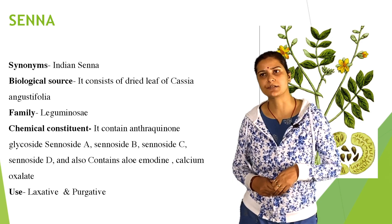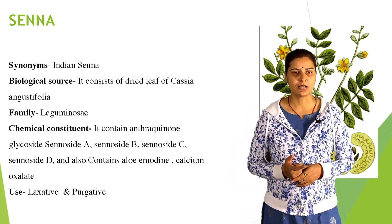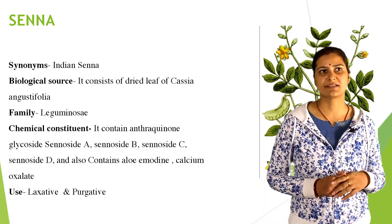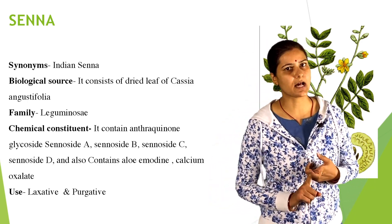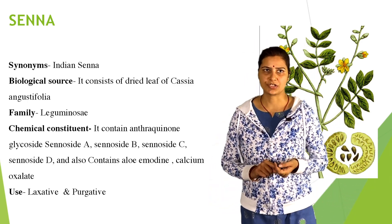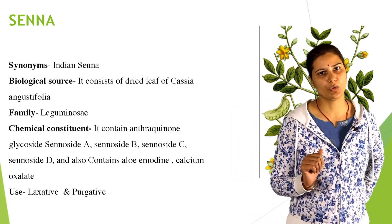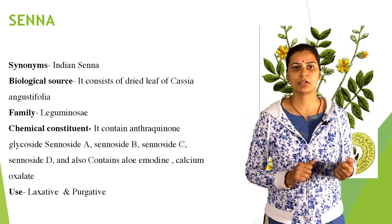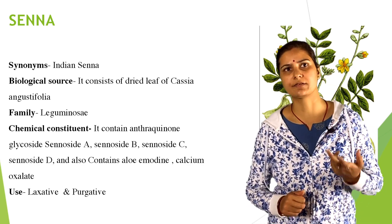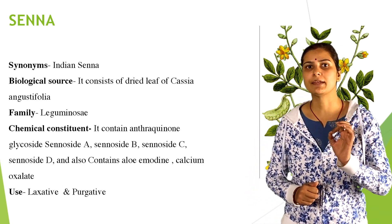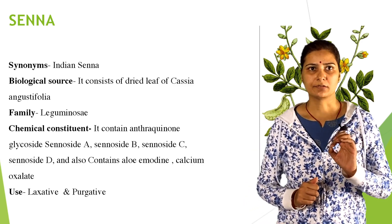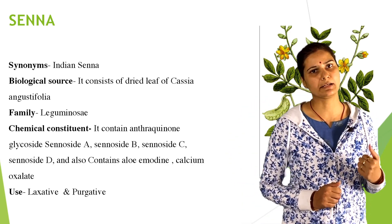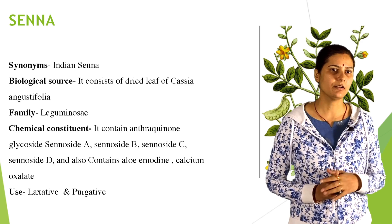Senna: synonym is Indian senna. Biological source — it consists of dried leaves of Cassia angustifolia. Genus: Cassia; species: angustifolia; family: Leguminosaceae. Chemical constituents: it contains anthraquinone glycosides — sennoside A, sennoside B, sennoside C, and sennoside D — which are the main active constituents. Other constituents are aloe-emodin and calcium oxalate. Uses: laxative and purgative.